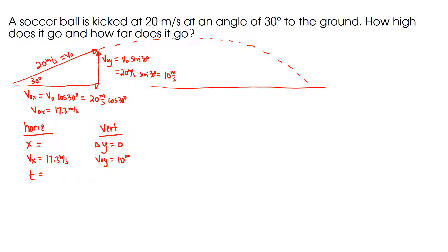My v-zero-y is 10 meters per second. When delta-y equals zero, this is only when delta-y equals zero — my final y-speed when I land on the ground is the exact opposite of my initial y-speed. Acceleration is gravity, which is minus 10 meters per second squared, and t is something I need to find.